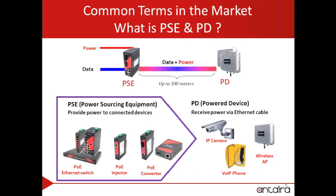Once the PSE is turned on and connected, the user only has to connect an Ethernet cable from the PSE to the PD. Then the PD would be powered up and can transmit data back and forth with the PSE — it's really that easy. Please don't forget that the restriction for the Ethernet cable distance between the PSE and PD is 100 meters, or approximately 300 feet.